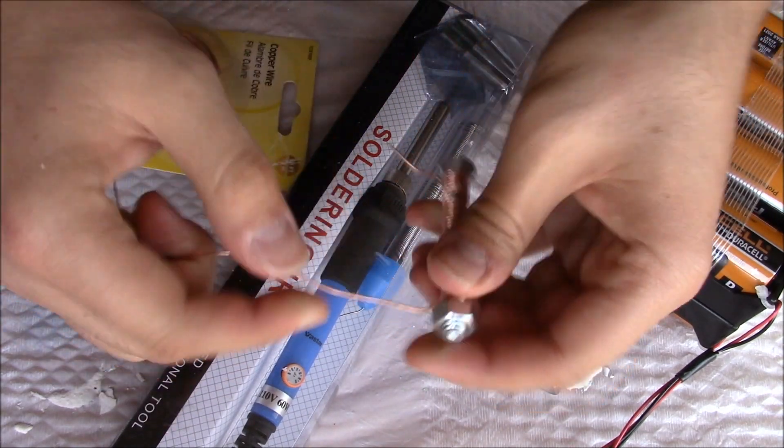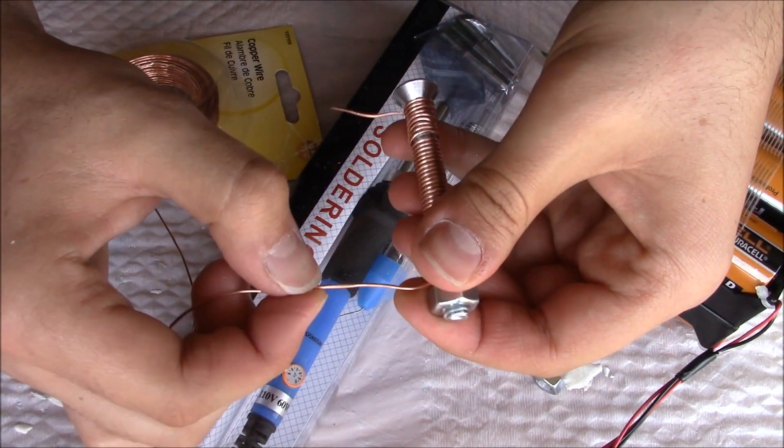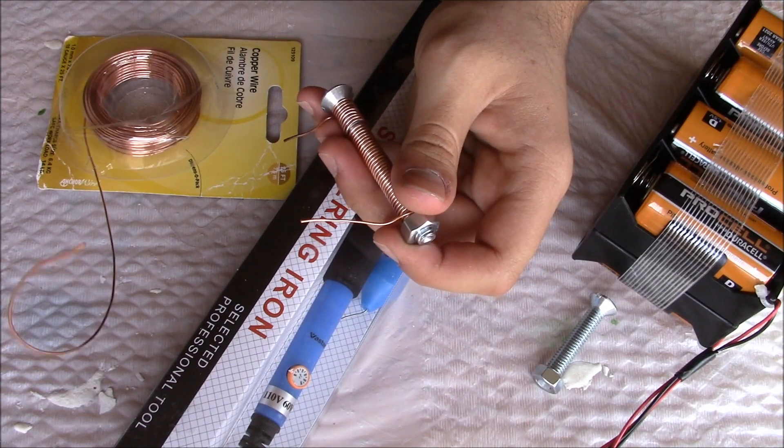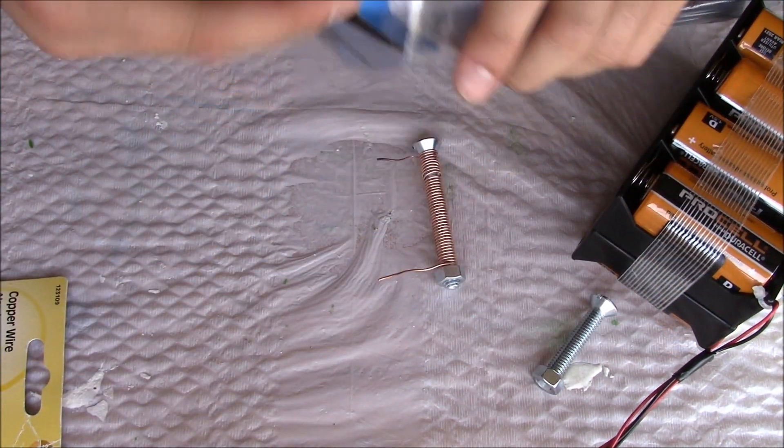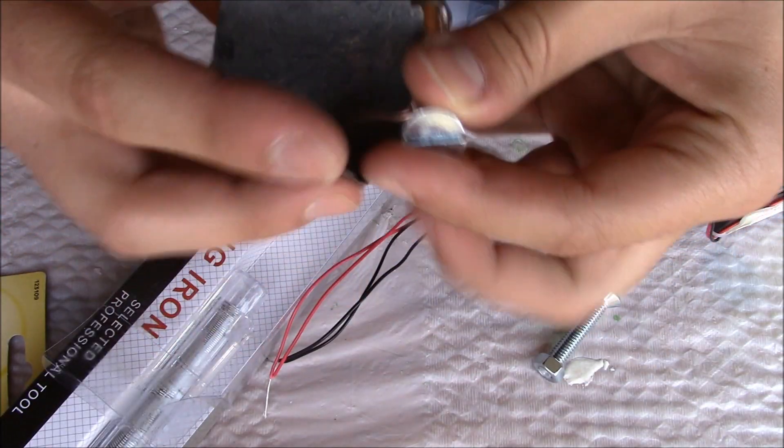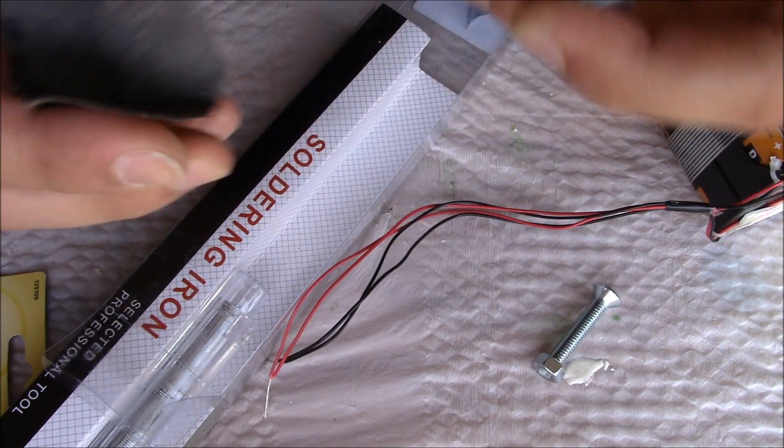You're not going to cut it yet. Now we want to plug in our soldering iron. Now you want to get the sandpaper and sand the end of the wires.